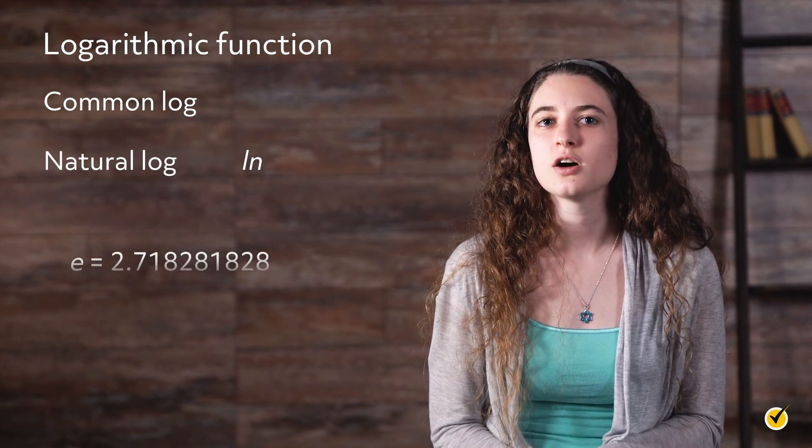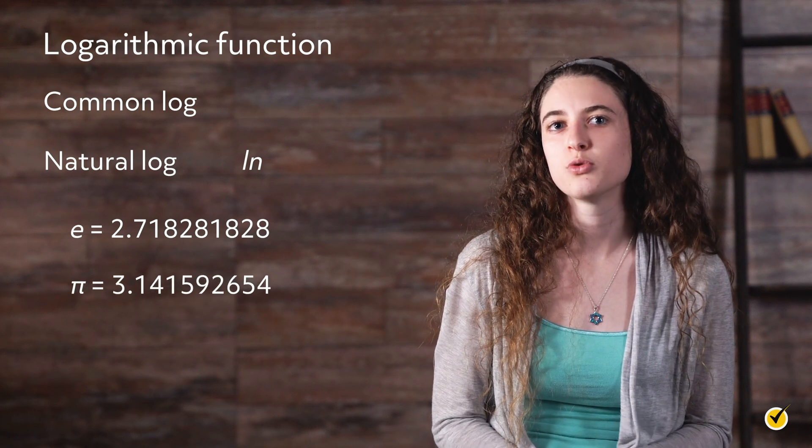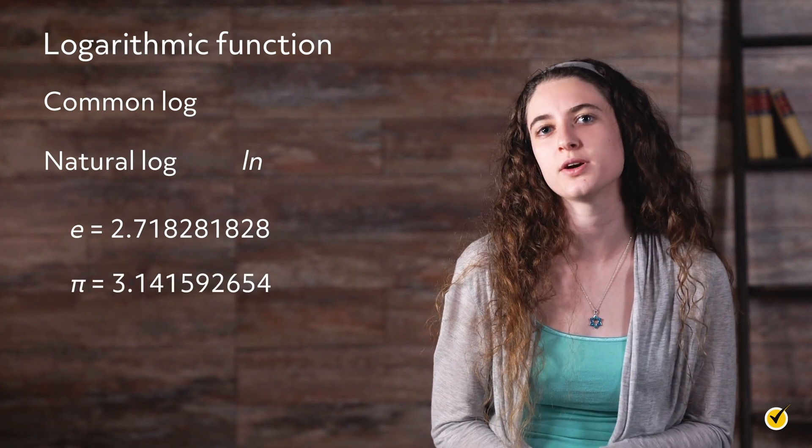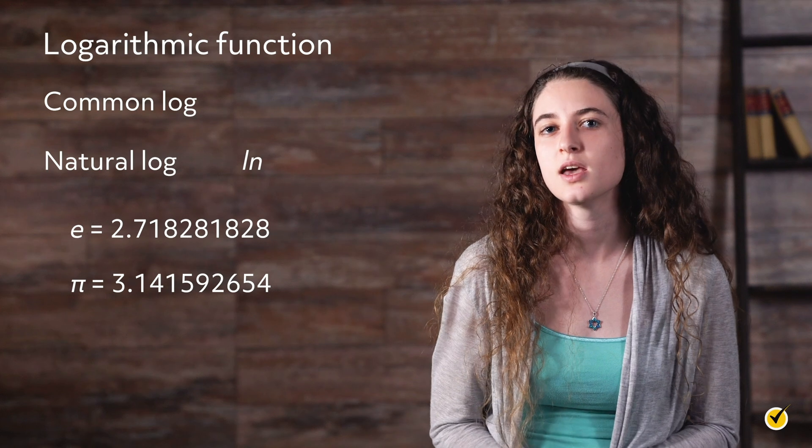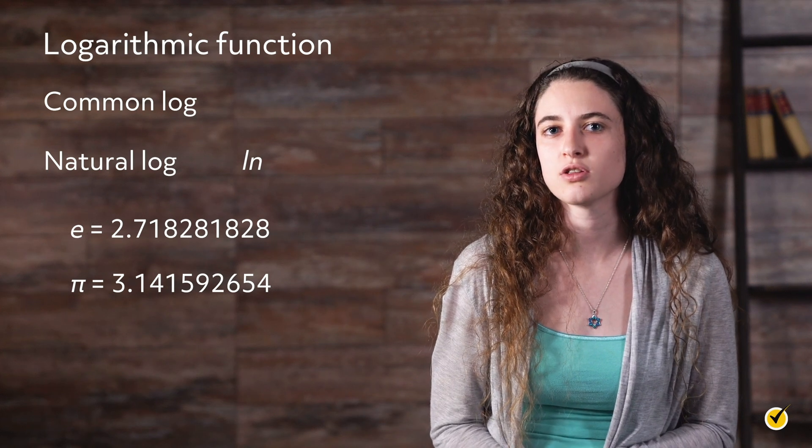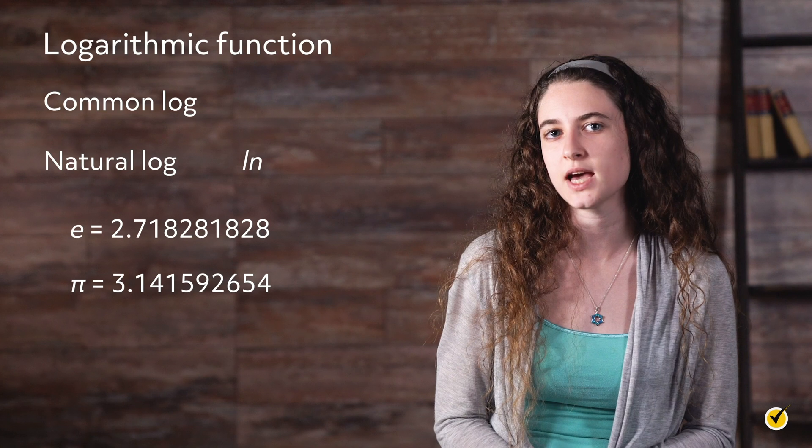Note that e is not a variable but an irrational number, like pi, with an approximate value of 2.718. If no subscript is indicated on a log, assume that it is a common log, with a base of 10.